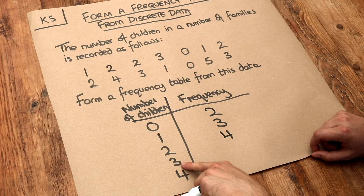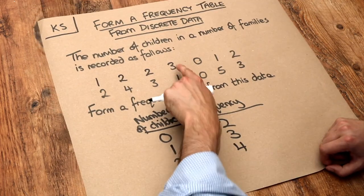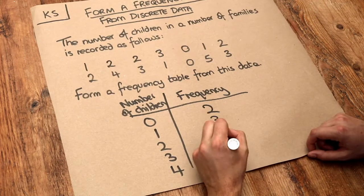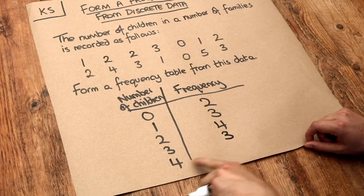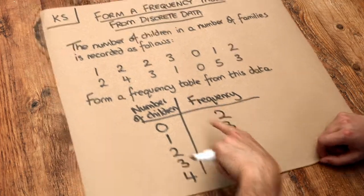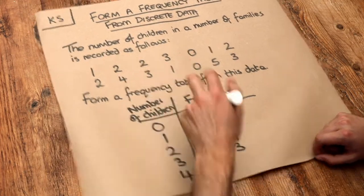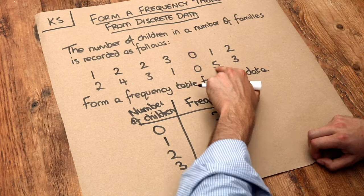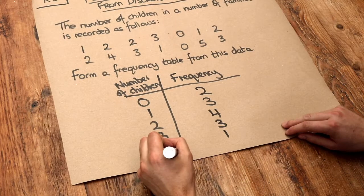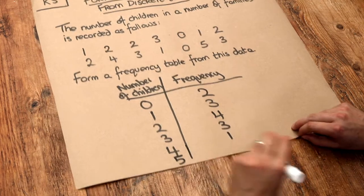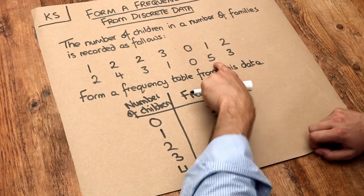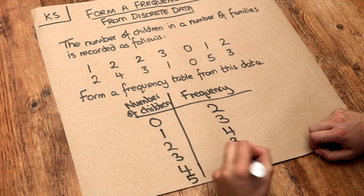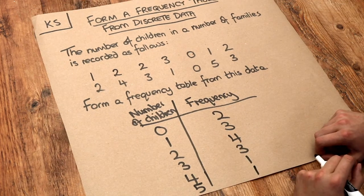How many families with three children? One, two, three — so the frequency is three. How many families with four children? Well we've got one there. And in fact I missed this family with five children here, so I'm going to add that now. That's okay. And I can see there's just one family with five children, so I'm going to put a one here.